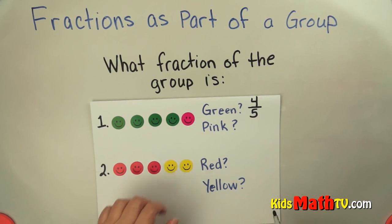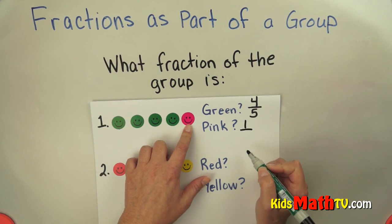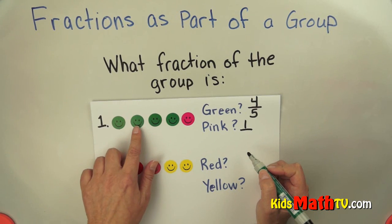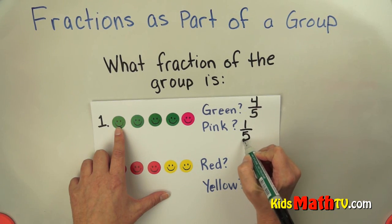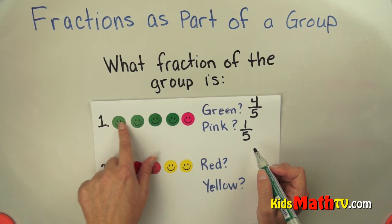Four are green out of five total. How many are pink? There is one pink, and one, two, three, four, five total. This is total, not just green - it's not pink and green, it's pink and total.